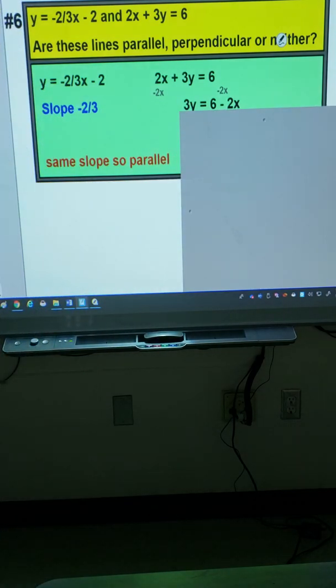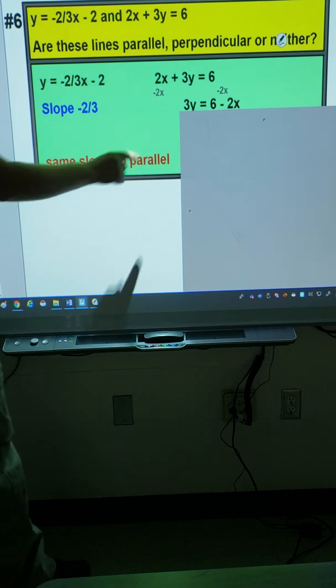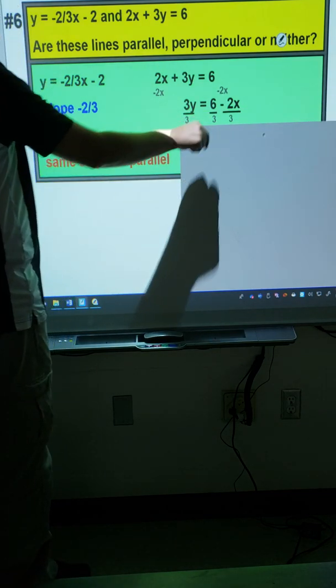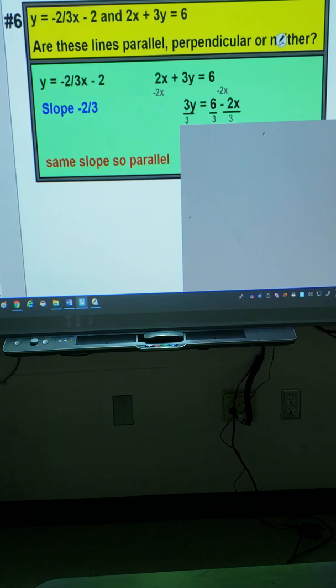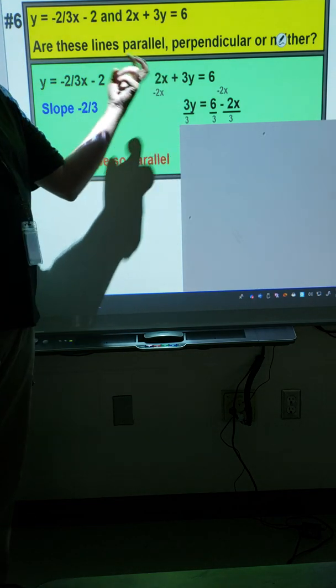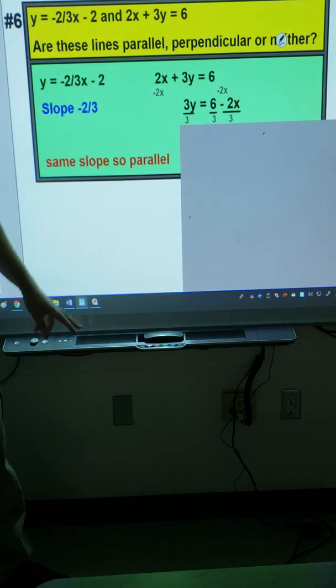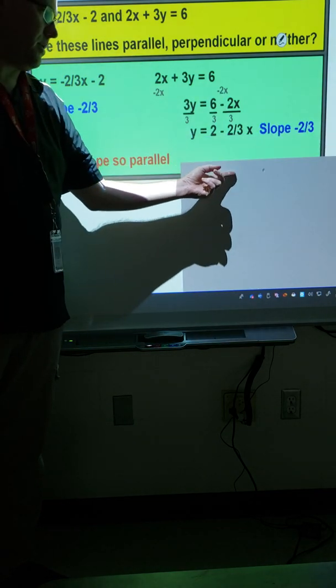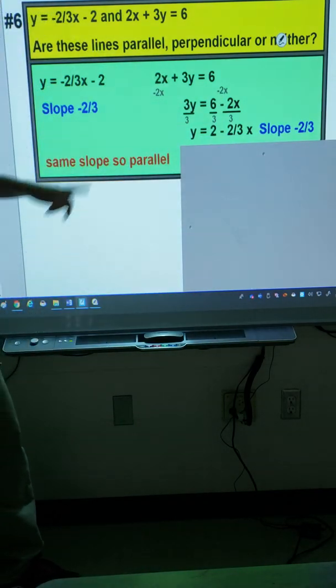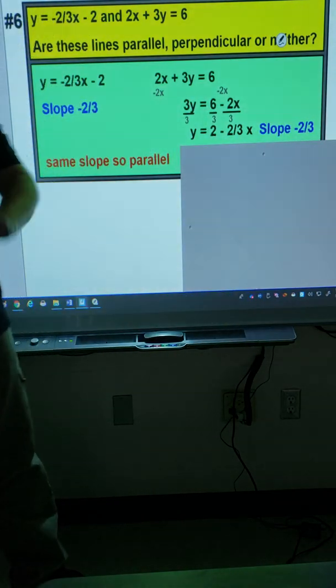And then our last step is, we don't want 3y, we just want y. So divide each term by 3. And then just go ahead and simplify. 3 divided by 3 is 1, so you just get left with 1y or y. 6 divided by 3 is 2. And negative 2 divided by 3 is just negative 2 thirds. So the slope is negative 2 thirds.